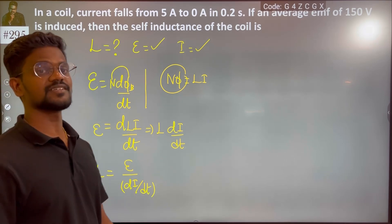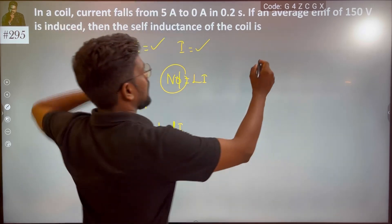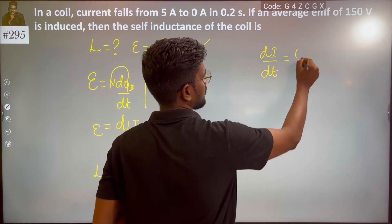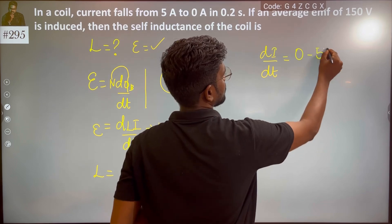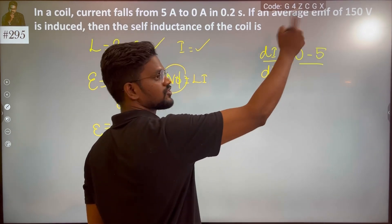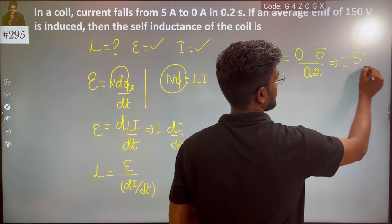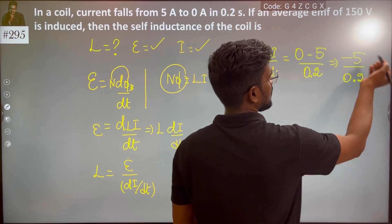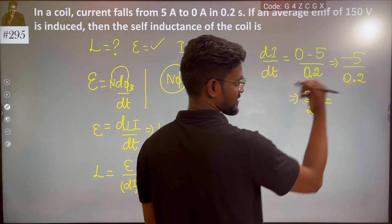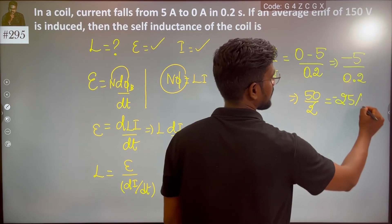dI/dt is the change in current. For 5A to 0A in 0.2 seconds: dI/dt equals final minus initial, so 0 minus 5 over 0.2. Multiplying and dividing by 10 gives us 50 by 2, which is 25. So dI/dt is negative 25 amperes per second.